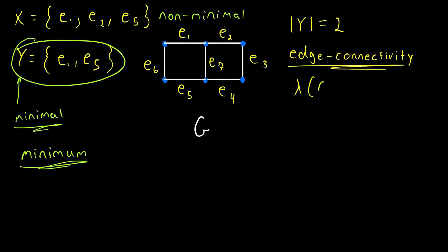This is written as lambda of the graph, lambda of G. So in this case, lambda of G, the edge connectivity, is equal to 2.